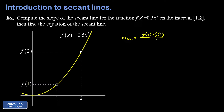We divide by the difference in x coordinates, which is 2 minus 1. To compute f of 2, we use the formula 0.5 times x squared: substituting 2 gives 0.5 times 2 squared, which is 0.5 times 4, equal to 2. For f of 1, plugging in x equals 1 gives 0.5 times 1 squared, which is 0.5.